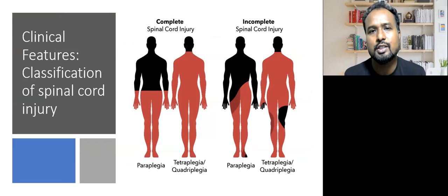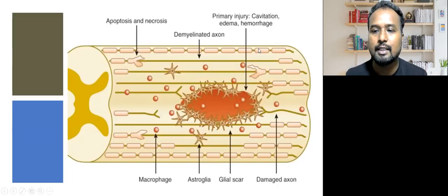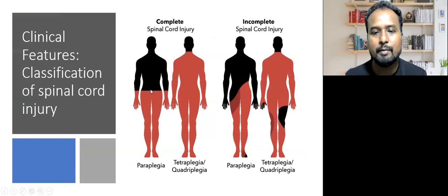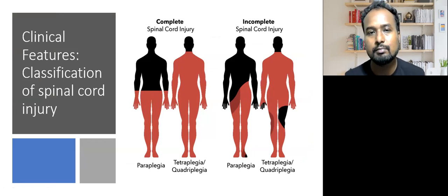Now, the clinical features — as you can see from the pathogenesis — there is a broad classification for spinal cord injury: complete and incomplete injury. As we have seen in the previous picture, this depicts an incomplete spinal cord injury. In some cases there may be complete cut — complete disruption, discontinuity of the spinal cord — which leads to complete spinal cord injury. In other cases where there is incomplete injury, meaning there are still some neurons, some axons still intact below the level of lesion.